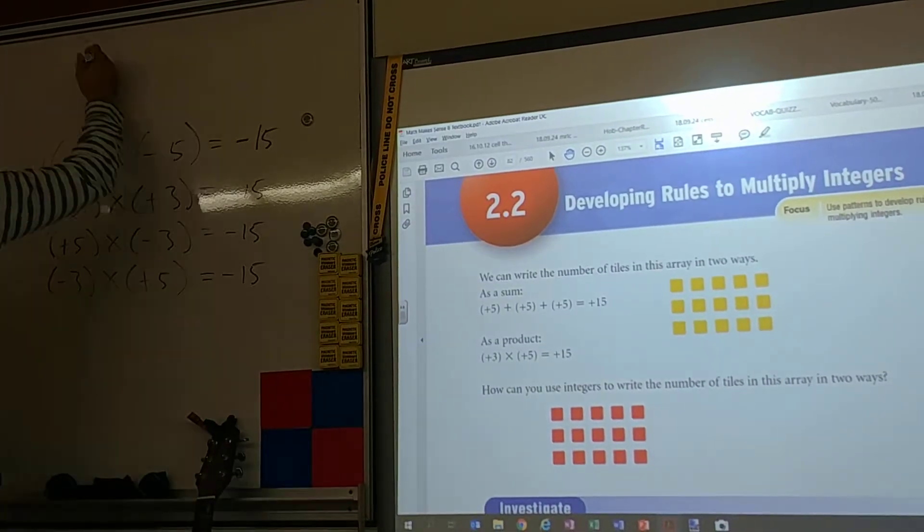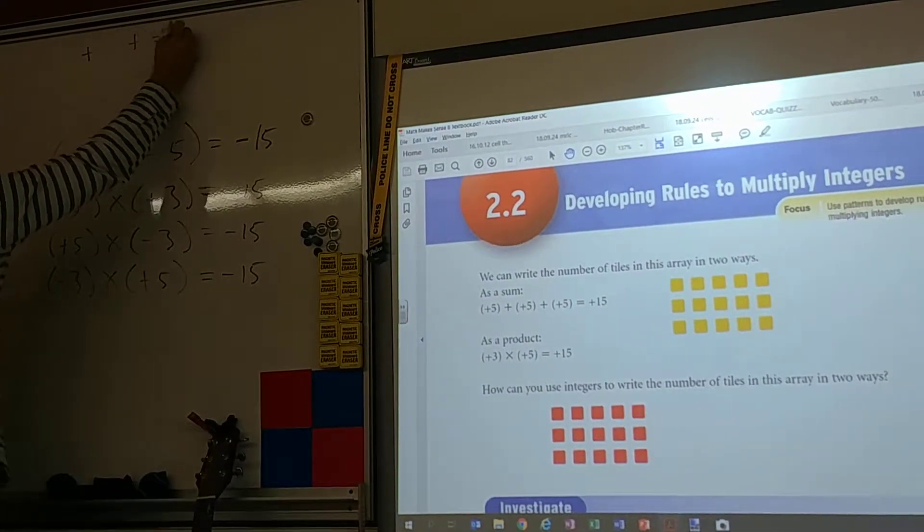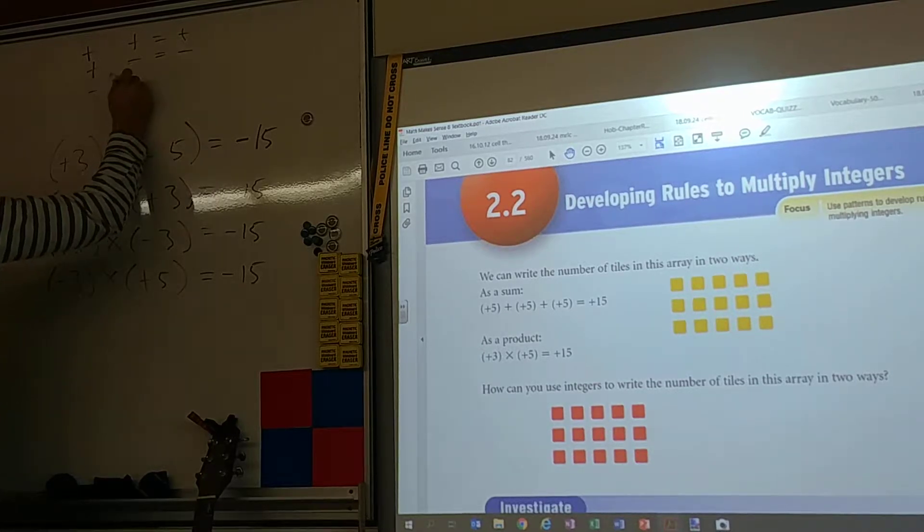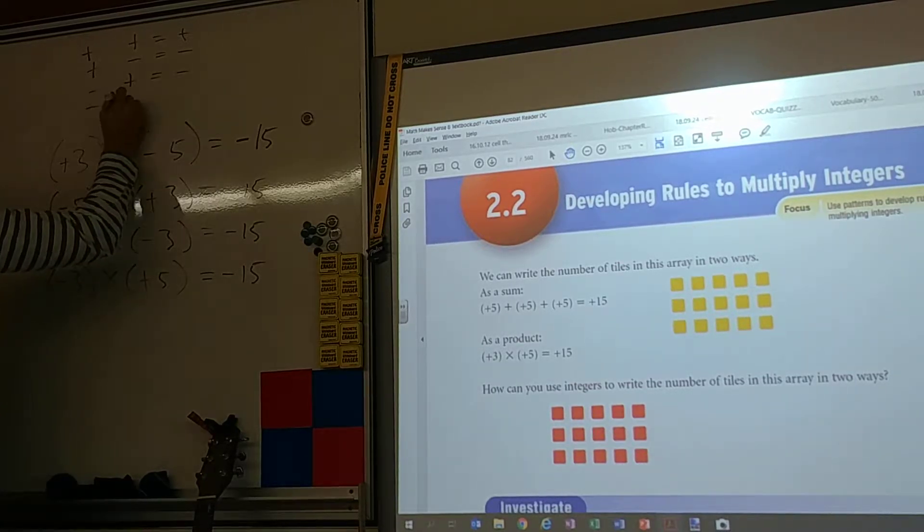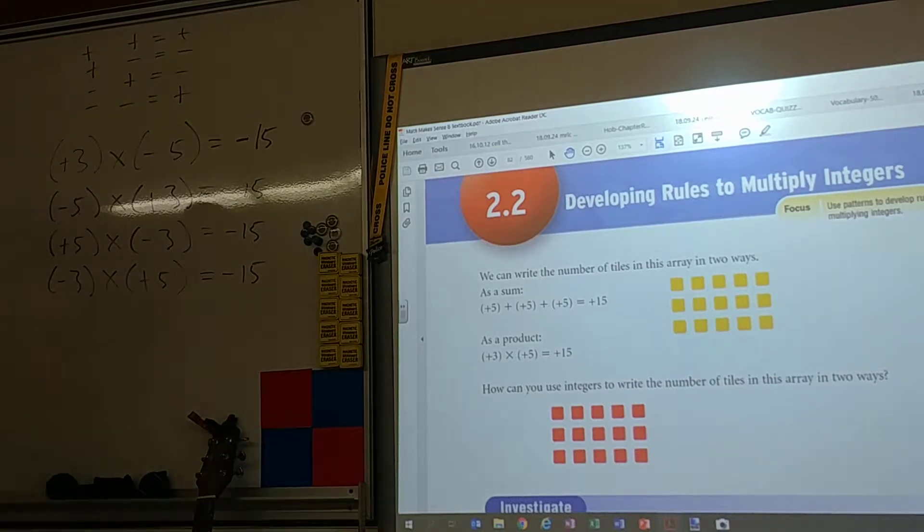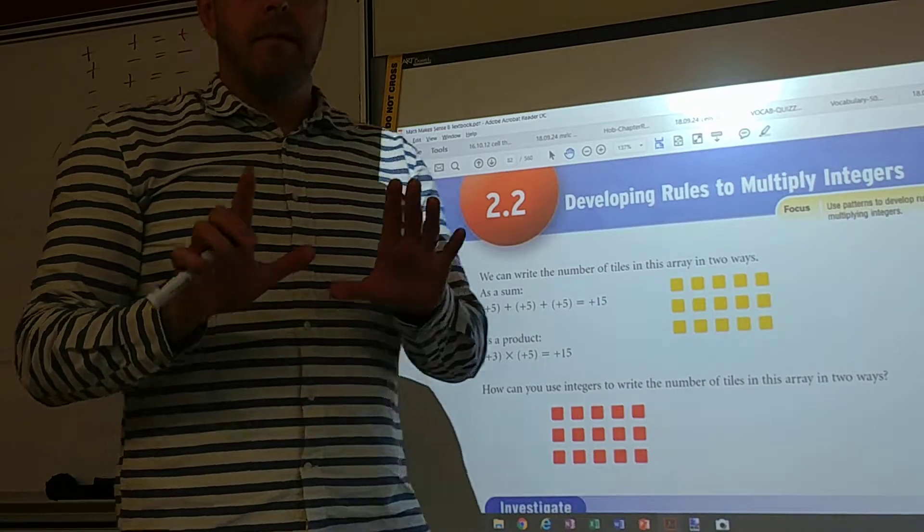In multiplication, it doesn't matter if you swap it left or right. But we also know that a positive times a positive equals a positive. A positive times a negative equals a negative. A negative times a positive equals a negative. And a negative times a negative? Positive. Positive.